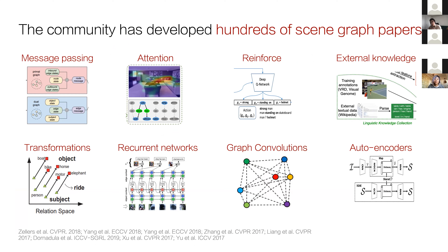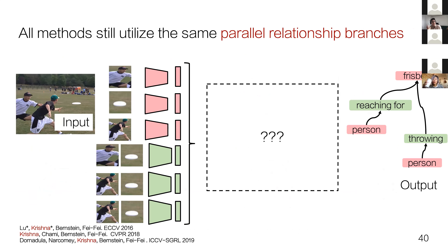Graph convolutions are just one of many frameworks for higher-order reasoning over relationships, and the computer vision community has built upon our original framework to develop hundreds of scene graph models incorporating ideas from message passing, reinforcement learning, and transformer-based approaches. Across all these models, the original decomposition inspired by Biedermann has remained consistent—the only thing that's changed is how the feedback connections are designed.